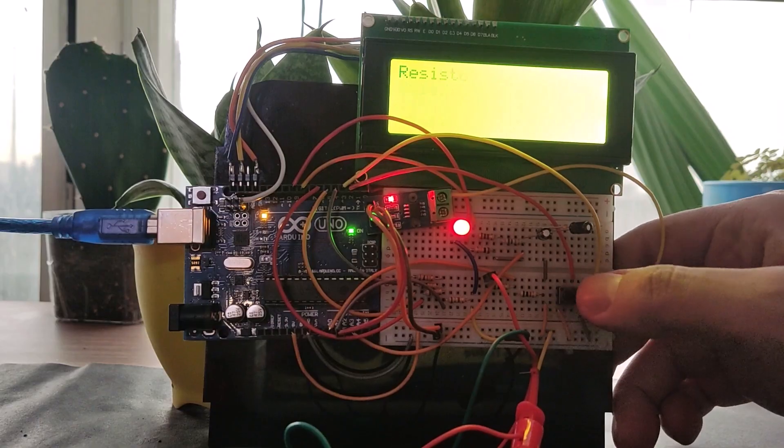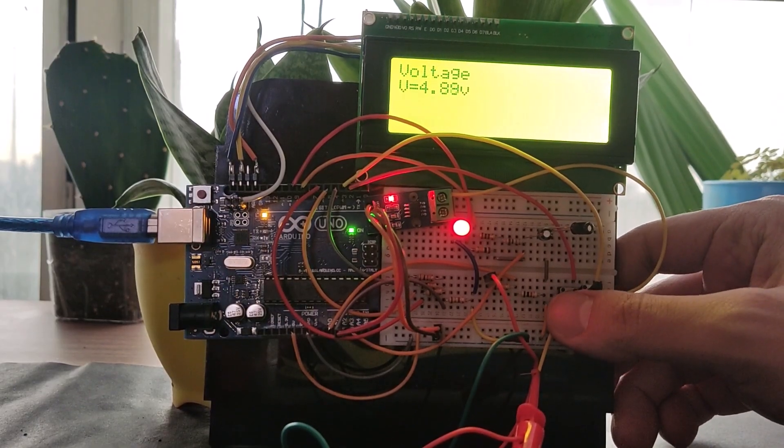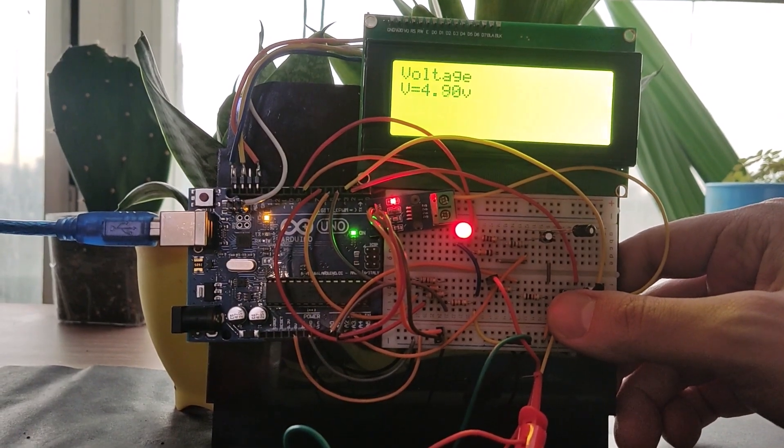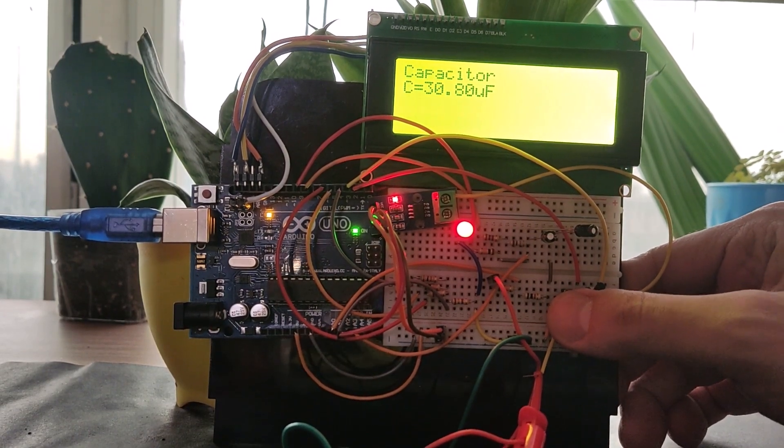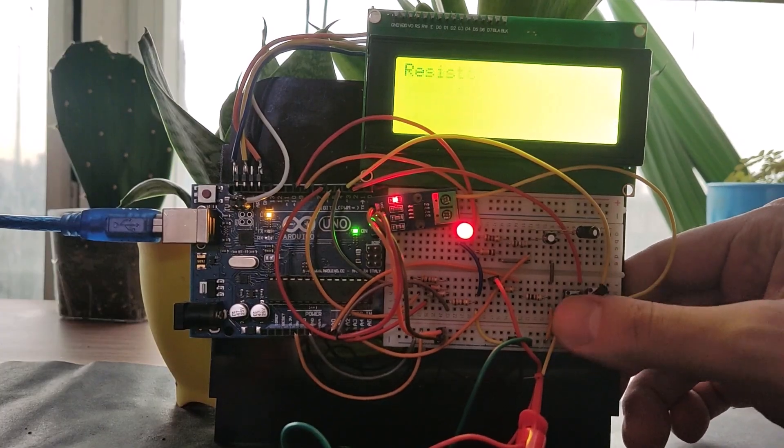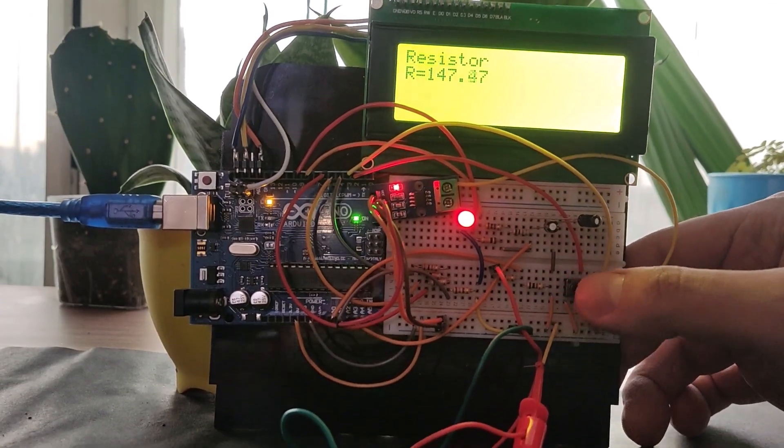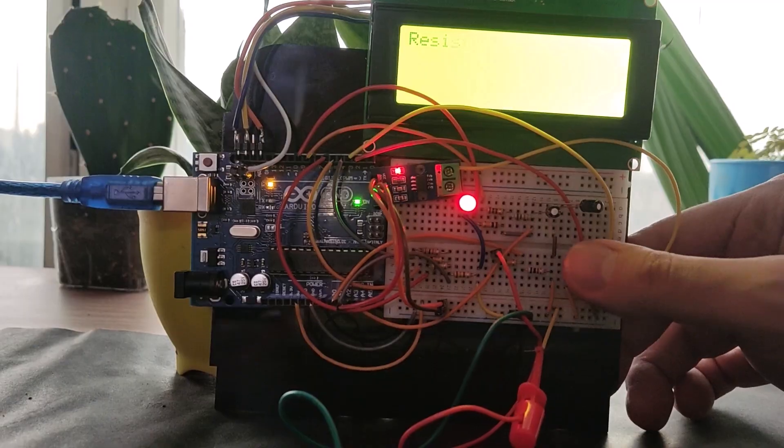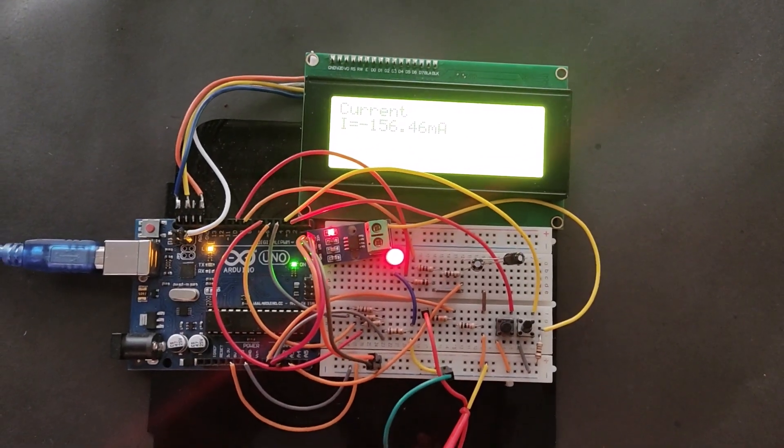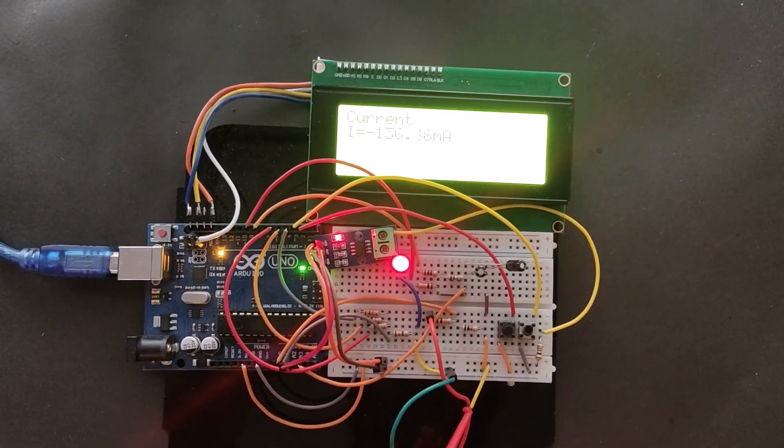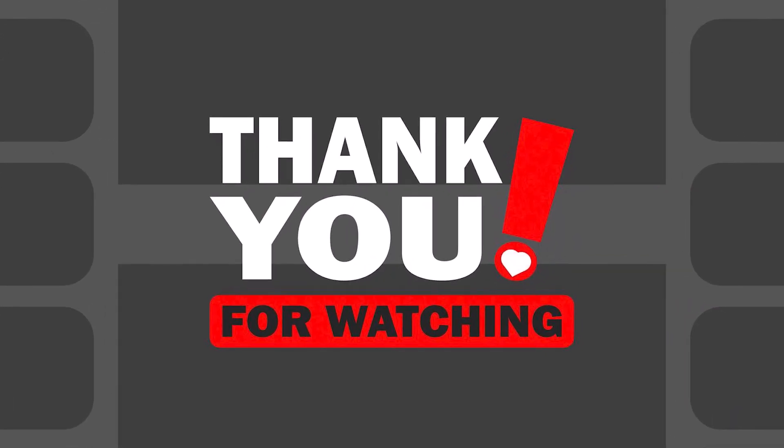In conclusion, building a digital multimeter with Arduino is a great way to learn about electronics and measurement techniques. This project not only teaches you how to measure electrical parameters, but also gives you a deeper understanding of how multimeters work. You can further enhance this project by adding features like auto-ranging, inductance measurement, or even a 3D printed case.